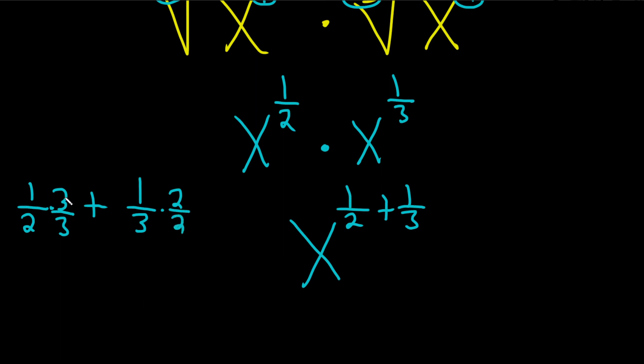So that will give you 1 times 3 is 3, 2 times 3 is 6, plus 1 times 2 is 2, 3 times 2 is 6. Beautiful. And now the denominators are the same, so we can add the numerators. 3 plus 2 is 5, so 5 over 6.